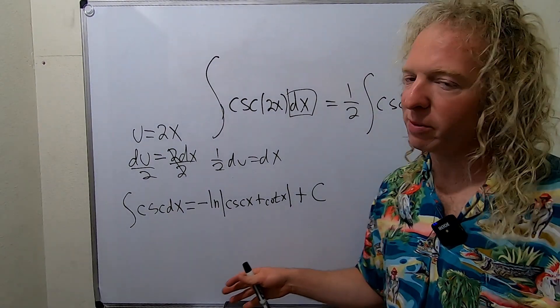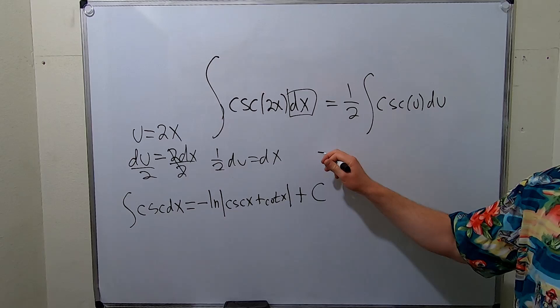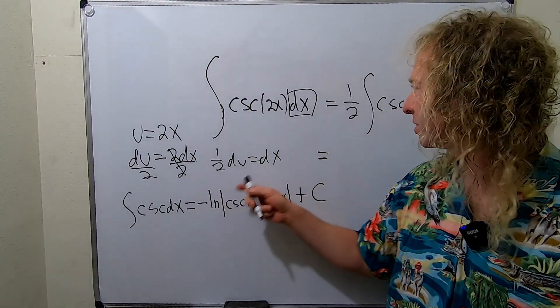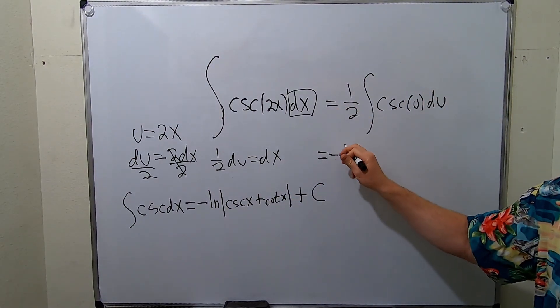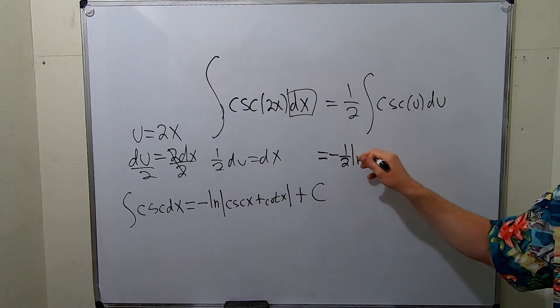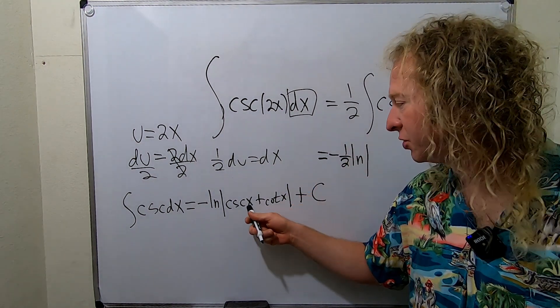So this will be... So it'll be negative, so I'm just going to put the negative here, okay? So negative 1/2 natural log absolute value, and then cosecant u plus cotangent...